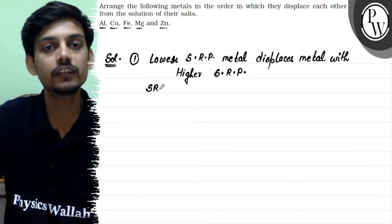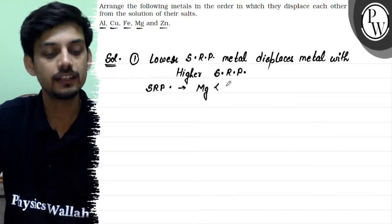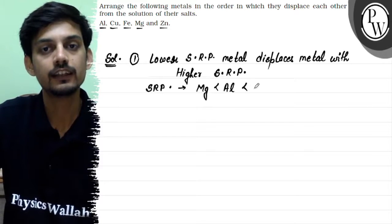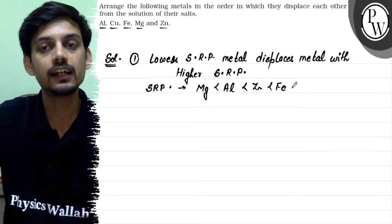Now using the electrochemical series, the order of SRP in the given metals is magnesium, then aluminum, then zinc, then iron, and the highest SRP is copper.